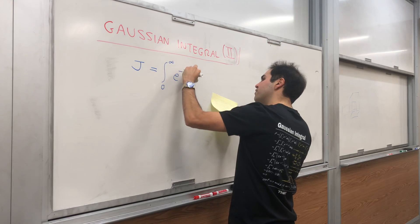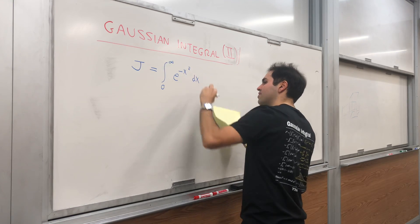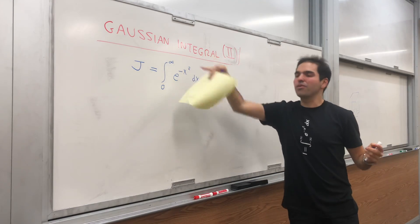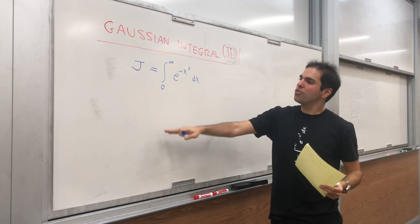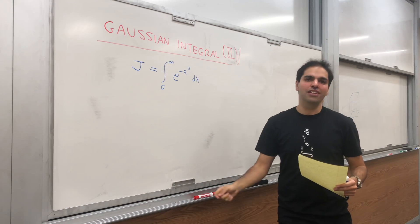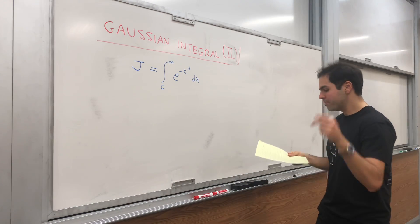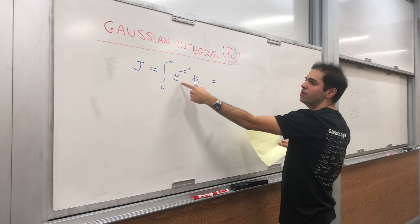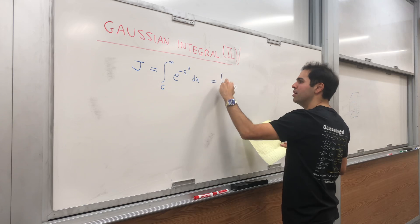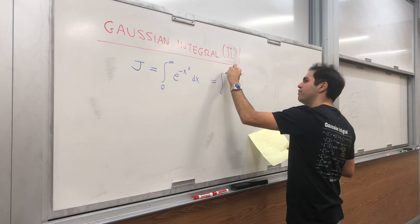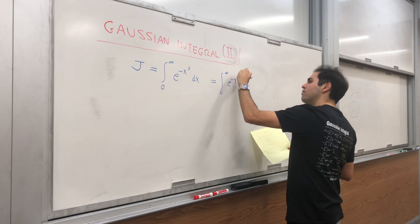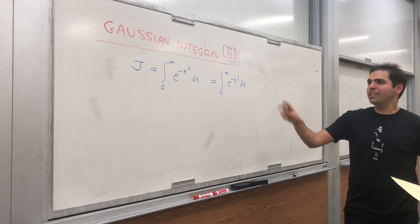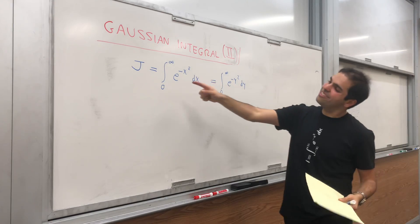Let J be the integral from 0 to infinity of e to the negative x squared dx. You'll see soon why we integrate from 0 to infinity — if you want the integral from minus infinity to infinity, just multiply by 2. The only multivariable step we need is to notice that this equals the integral from 0 to infinity of e to the negative y squared dy.